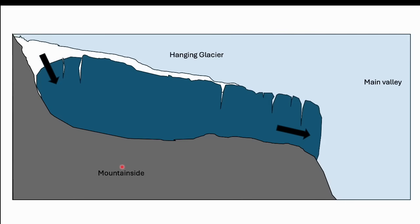If we think about how hanging glaciers deform — this is my cartoon of a hanging glacier. The dark blue is the ice, we have the mountainside and the main valley, so this is hanging on the side of a main valley. The white is relatively young snow. Fresh snow is deposited, certainly at the top of the glacier, and that loads up the ice. Loading at the top puts this region into compression — you're adding extra weight up there, compressing that region.